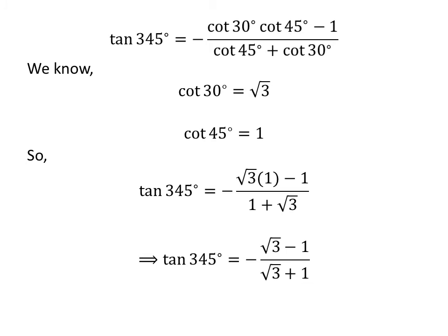Further simplification gives us tangent of 345 degrees is equal to minus square root of 3 minus 1, upon square root of 3 plus 1.